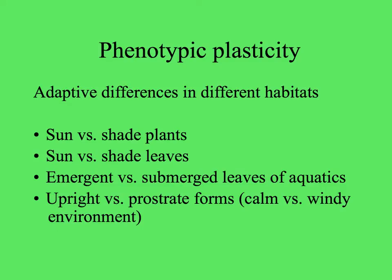There is a lot of phenotypic plasticity shown in plants, both within an individual and between individuals — sun versus shade leaves, and plants that grow in the sun versus plants that grow in the shade. Different individuals of the same species, sometimes even different pieces of the same genet, can differ. In aquatic plants, leaves along the same stem look different depending on whether they're above or below the water. And many plants have different forms depending on the prevailing wind — they can grow upright or prostrate, very close to the ground.